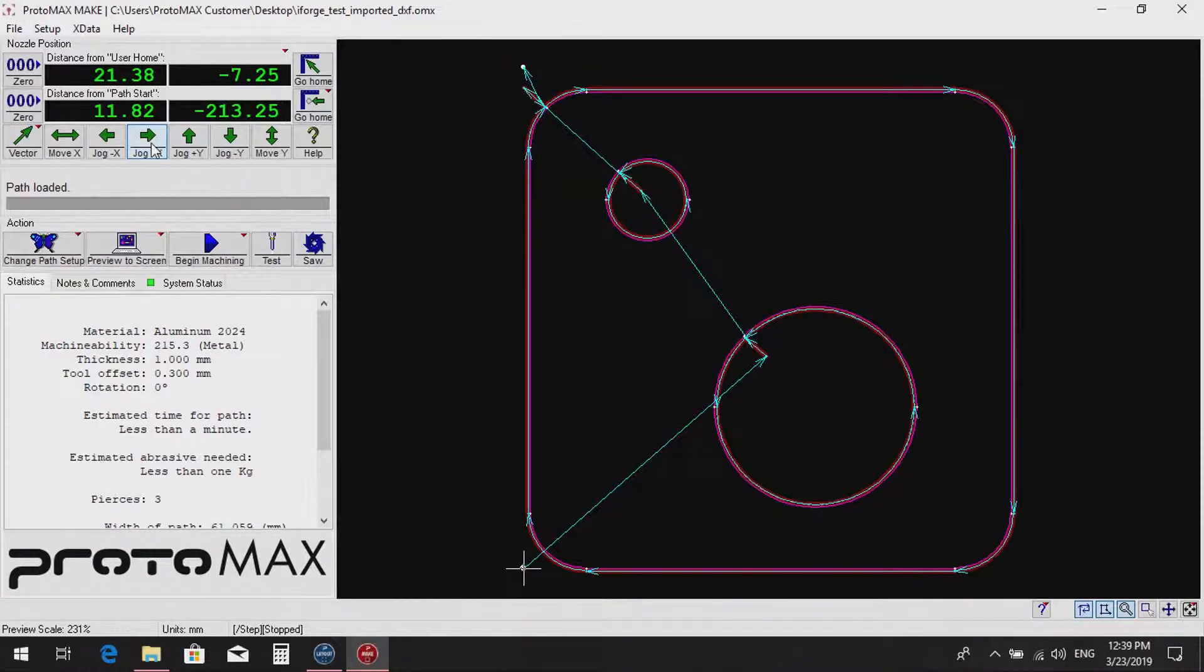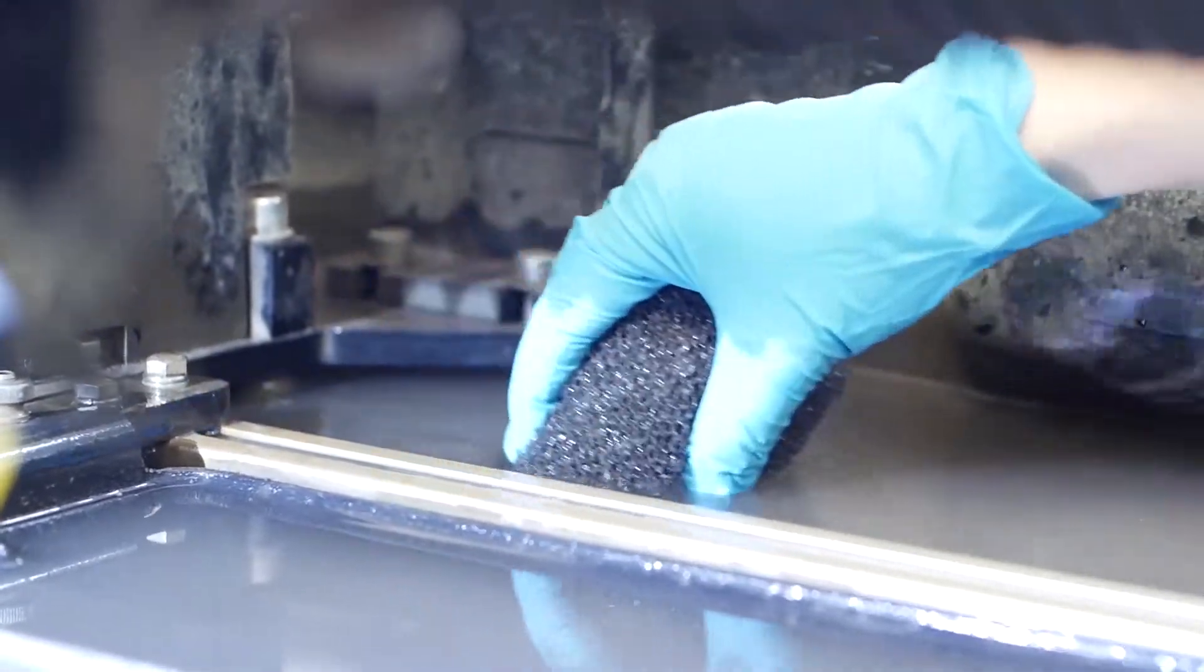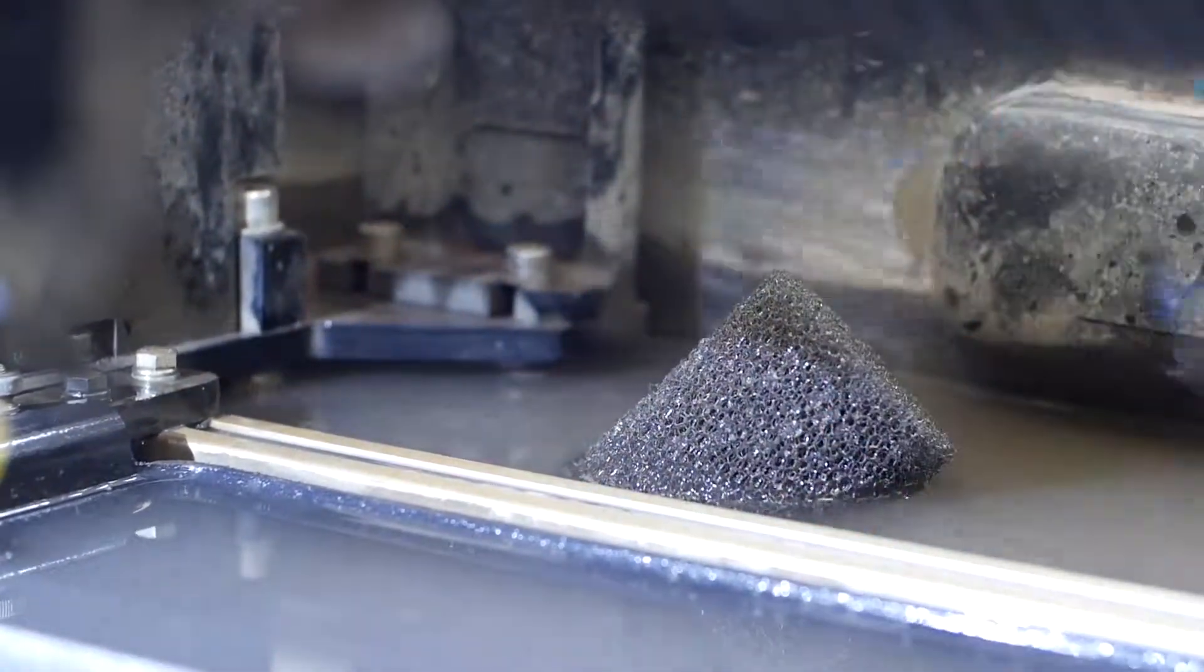After cutting, lift up the nozzle and use the jog controls to move the nozzle out of the way. Lower the pump overflow to lower the water level to 10mm beneath the top of the slats.